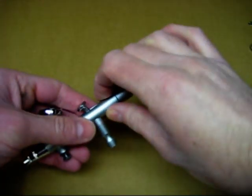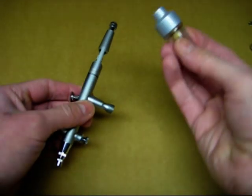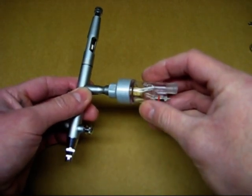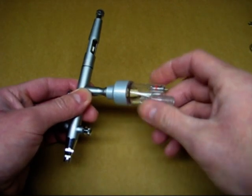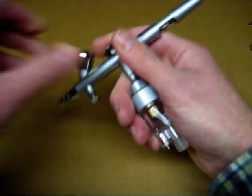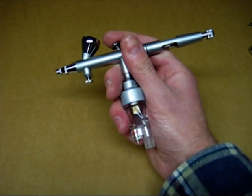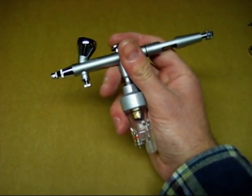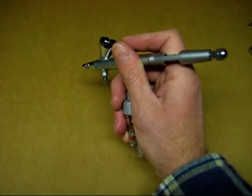What you also get are various adapters and you get this in-line air filter. This just screws to the bottom of the airbrush. The nice thing about this is it also acts as a grip. It does make things a lot more comfortable when you're painting.